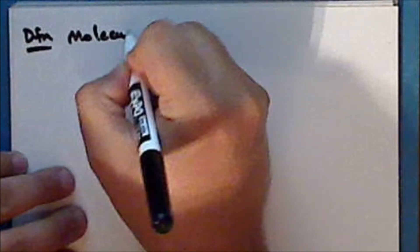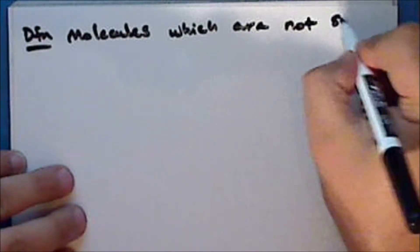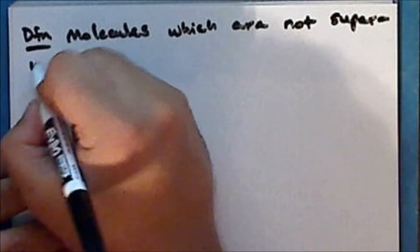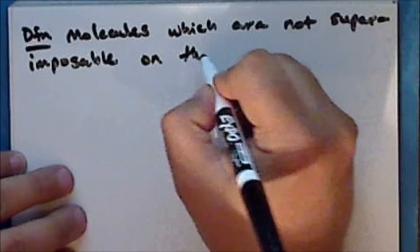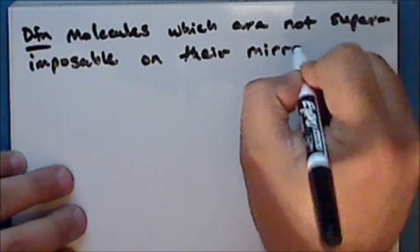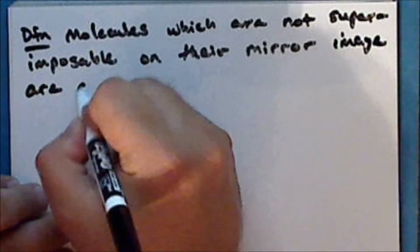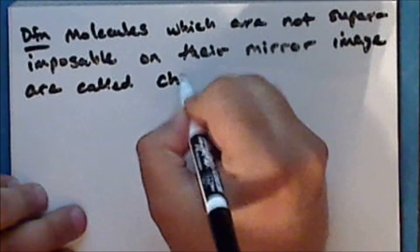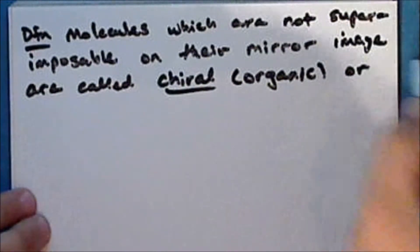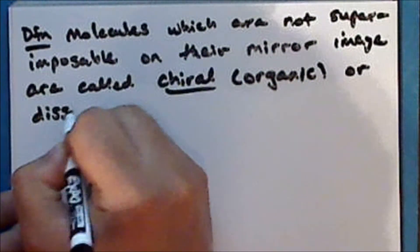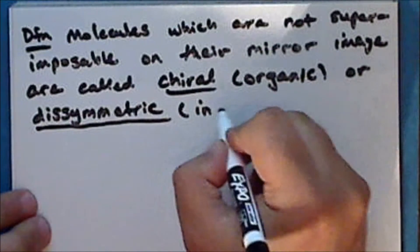So new definition. Molecules which are not superimposable on their mirror images are called chiral, especially by organic chemists, or dyssymmetric especially by inorganic chemists.